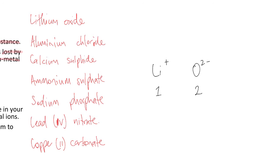We then find the lowest common multiple of 1 and 2, which happens to be 2. To get the lithium ratio, you take the magnitude of the charge and multiply it by a certain number to reach the lowest common multiple. So what number multiplies by 1 to get to 2? It's 2 — so we do times 2. And the multiplier for 2 to get to 2 is just times 1. So you need two lithiums and one oxygen.